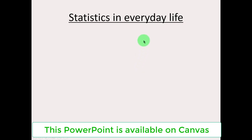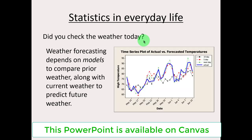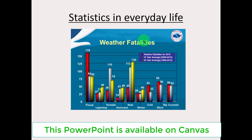I think a lot of us probably see and have an intuitive understanding of some statistics displayed to us in everyday life. For instance, weather is forecasted based on very intense statistical and mathematical models where data based on current variables such as pressure, wind, temperature, etc. is used to learn about something in the future — to make predictions. Here's another example of statistics based on weather where information is displayed in a certain type of graph. This is called a bar graph.